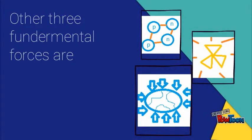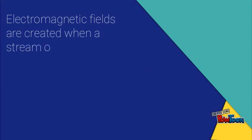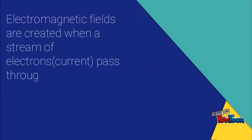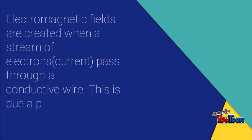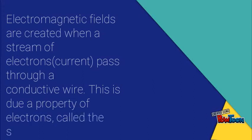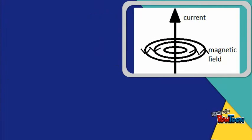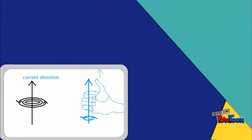So let's get to the basics of electromagnetic induction. Electromagnetic fields are created when a stream of electrons pass through a conductive wire. This is due to a property of electrons called the spin. Magnetic field generated by the current is always perpendicular to the direction of the flow of the current.